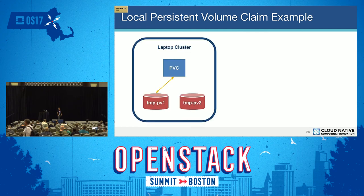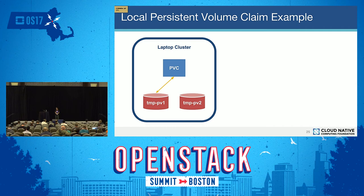Let's visualize this. Here's my laptop cluster. As a user, I have my persistent volume claim request. When it comes in, the system looks over all the persistent volumes in the cluster, examines the storage class name, capacity, and all other requested parameters, filters the persistent volumes, and finds the one that works best for this pod. The system then binds the persistent volume claim and persistent volume together and mounts that volume into my container.